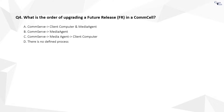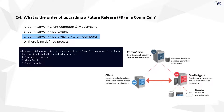Question 4. The correct answer is C. You need to install the feature release on CommServe first, followed by media agents, and then client computers. Use the CommServe console update software feature to select the CommServe computer along with media agents and clients during the feature release installation. The CommServe console installs the feature release on the CommServe first, and then on the media agents and clients.